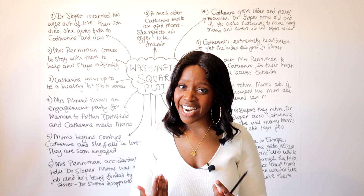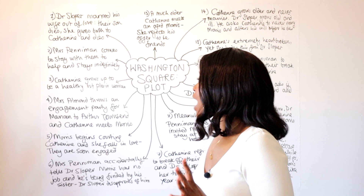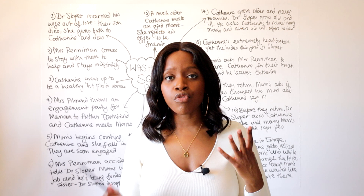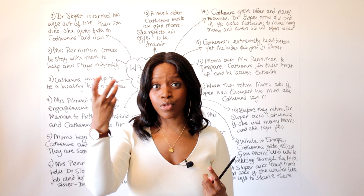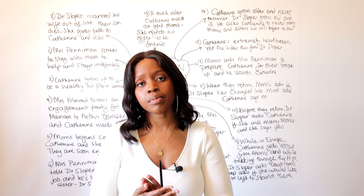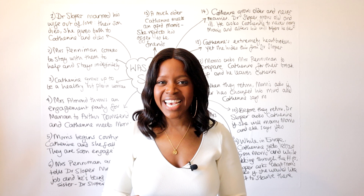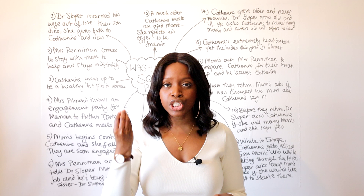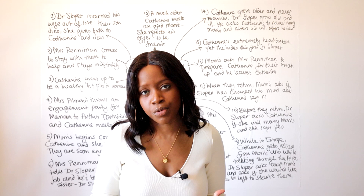I'll be walking you through this mind map now. When it comes to Washington Square, we have the tragic heroine Katherine, who is torn between a rock and a hard place — between the love she's developed for Morris Townsend, who is a very mercenary and calculating man, versus the loyalty and duty she feels towards her father, Dr. Sloper, who is equally quite harsh to her.